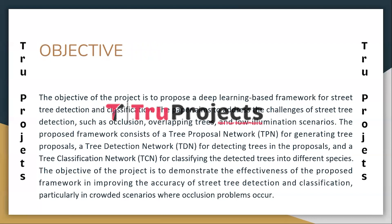The proposed framework consists of three main components: the tree proposal network for generating tree proposals, the tree detection network for detecting trees within the proposals, and the tree classification network for classifying the detected trees into different types.